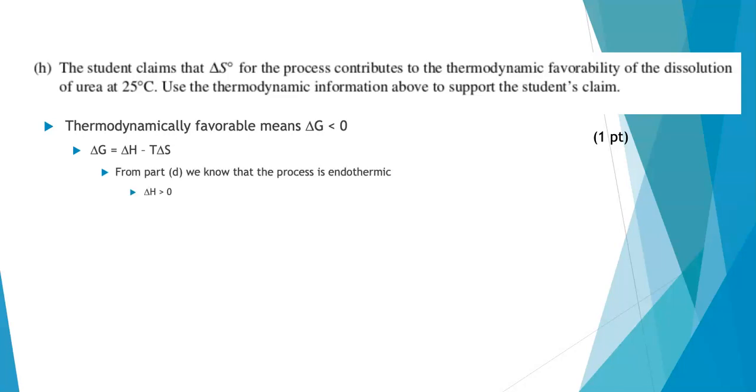And we know from part D in our work there that the process is endothermic, which means delta H is a positive value. So if we need delta G to be negative, it would really be helpful for delta S to be positive. And we know that that is true from the work we just did in part F. So the T delta S term is really the key here. Delta H is positive. The temperature, we're at 298 Kelvin. We always want to be in Kelvin temperatures when we do these problems. And the entropy change is positive. So the T delta S term makes the value of delta G lower, makes it smaller, hopefully negative, compared to delta H. We don't actually have any numbers here. But if delta G is getting smaller, that's making it more favorable. And that's really what kind of reasoning you needed to use here.